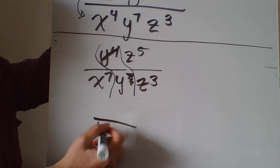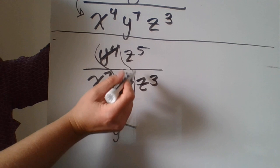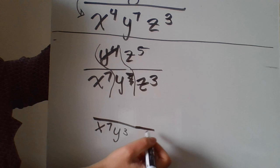I have x to the seventh and I have y to the third because it was seven. Four of them came out of that seven. So now I have three left.